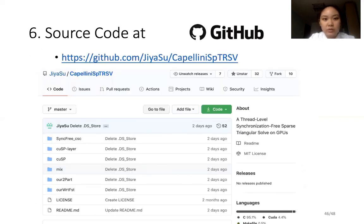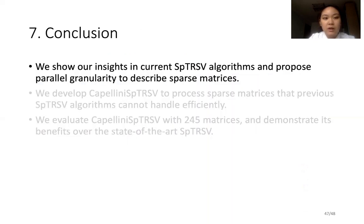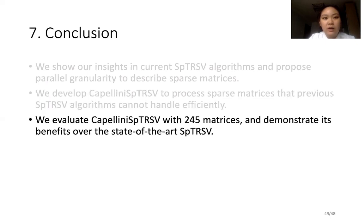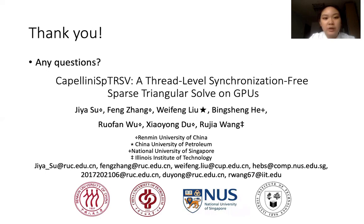Capellini's sparse triangular solve is open source on GitHub. Currently, it has already drawn some attention. Here is our conclusion. We show our insights in current sparse triangular solve algorithms and propose parallel granularity to describe sparse matrices. We develop Capellini for sparse matrices that previous algorithms cannot handle efficiently. We evaluate Capellini SpTRSV with 245 matrices and demonstrate its benefits over the state-of-the-art sparse triangular solve. Thank you for listening. I am glad to answer any questions.